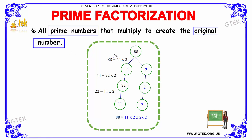We have the number 88. 88 can be written as 44 into 2, where 2 is a prime number. Further splitting 44, we can write 22 into 2 — again, 2 is a prime number. Multiplying 11 with 2, we get 22, so 2 will again be a prime number.